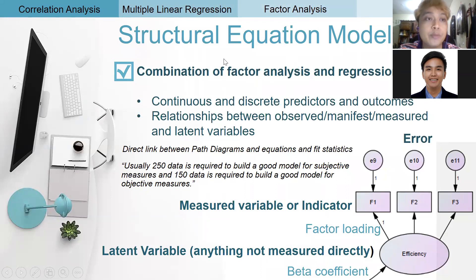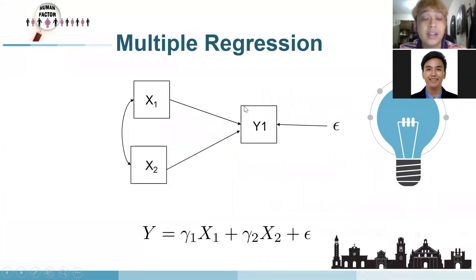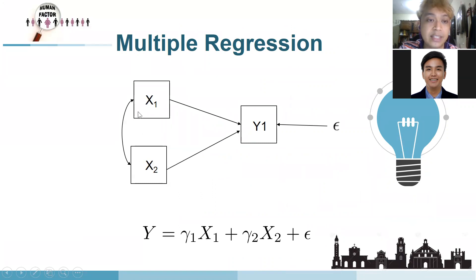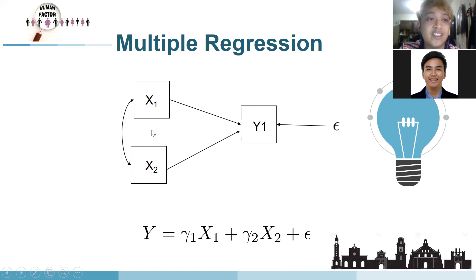SEM is described in some books as a combination of factor analysis and multiple linear regression. For example, if you have gender and hand size affecting grip strength, that's similar to multiple linear regression. But the difference is that SEM can also see the correlations between gender and hand size at the same time — it's a predictive model that simultaneously examines relationships among variables.